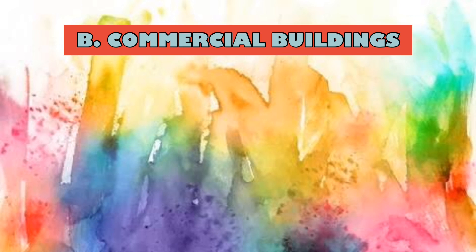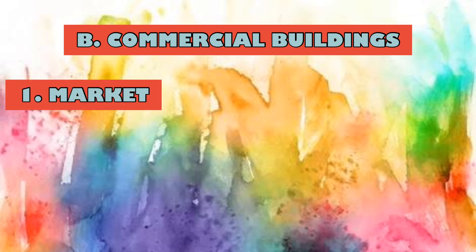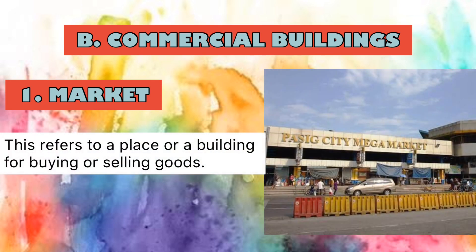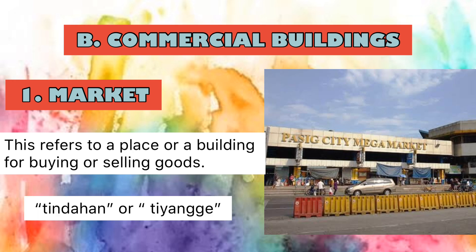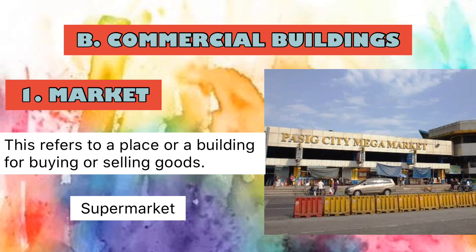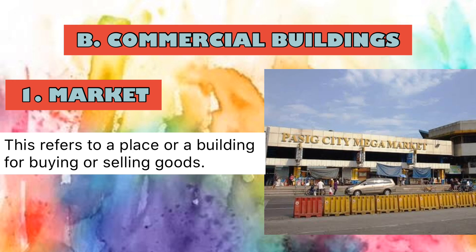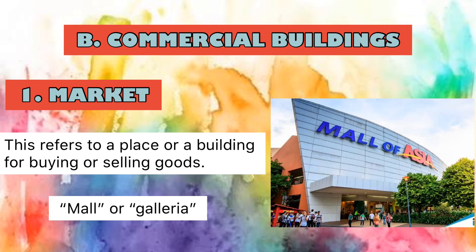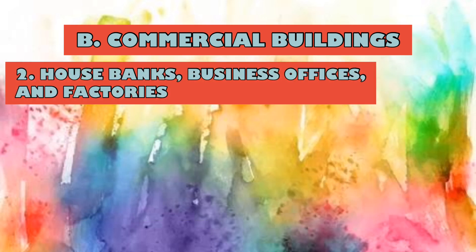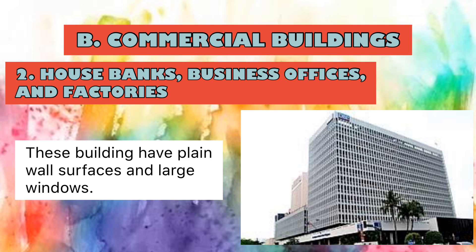Next, we have commercial buildings. The first example is the market, also known as palengke, which is a place or building for buying and selling goods. Nowadays, the palengke has evolved into the supermarket, which puts the wet market and grocery together in the same complex, with designated areas for both perishable and non-perishable commodities. The mall or galleria is a more recent evolved form of the palengke — a one-story or multiple-story building filled with shops. We also have buildings that house banks, business offices, and factories. Those built during the 1950s have plain wall surfaces, large windows, bold rectangular forms, and clean lines.